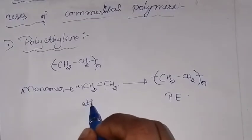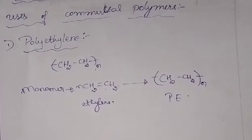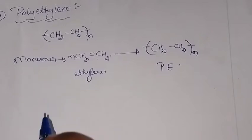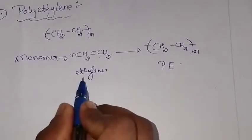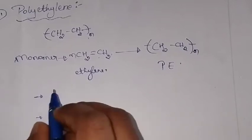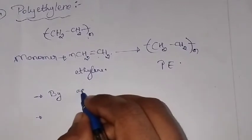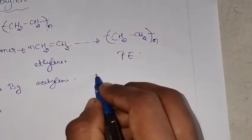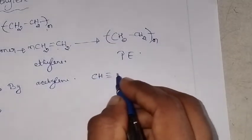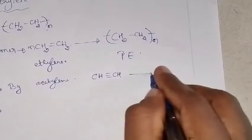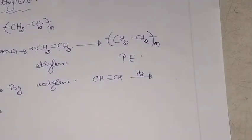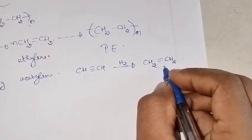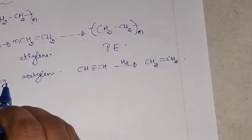Ethylene, the starting material, can be obtained by three methods. The first one is by hydrogenation of acetylene. You have acetylene (CH≡CH), and whenever you make it undergo hydrogenation, you will get CH₂=CH₂, which is your starting material for polyethylene.